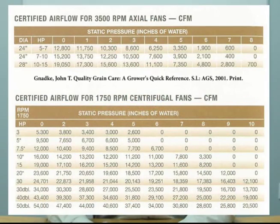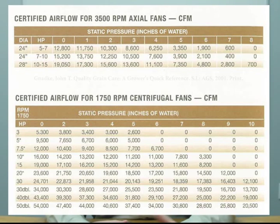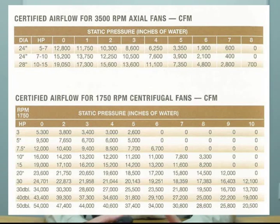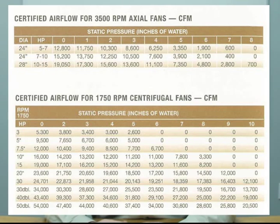On the two charts shown, there is one for axial vane fans and one for centrifugal fans. On the left side you choose what size of fan you have and the horsepower, and at the top of each chart is the static pressure. Knowing that static pressure and your fan horsepower, you can follow across and determine the total CFMs you have at that current depth of grain.